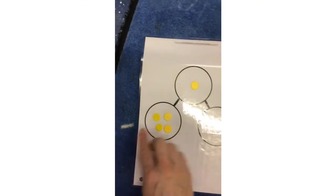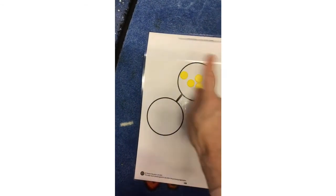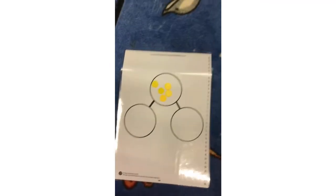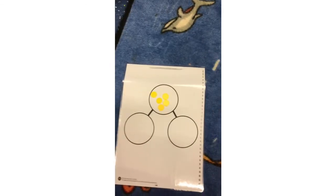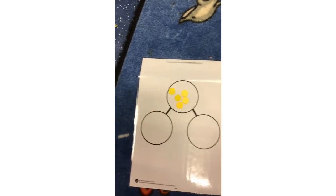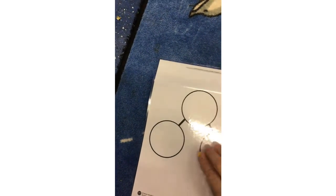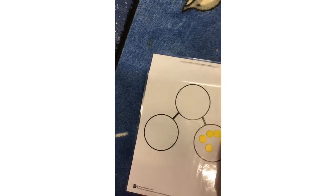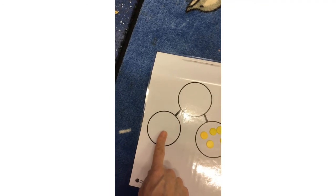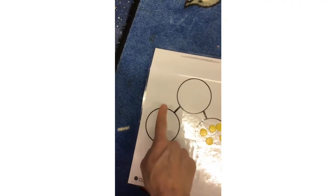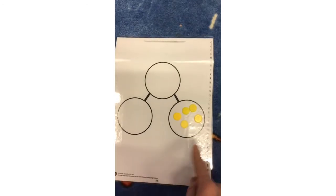When they move back, I still have five in the whole. Is there another way I can do it? Let me think. Maybe I could put them all in this part and none in this part. I've got zero here and five here.